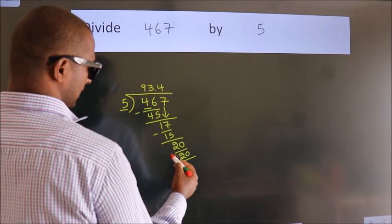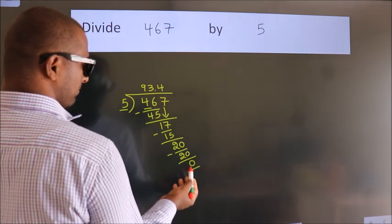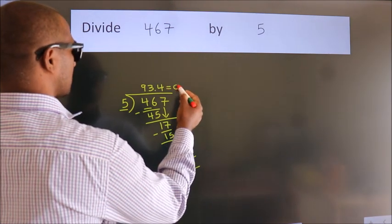Now we subtract. We get 0. We got remainder 0, so this is our quotient.